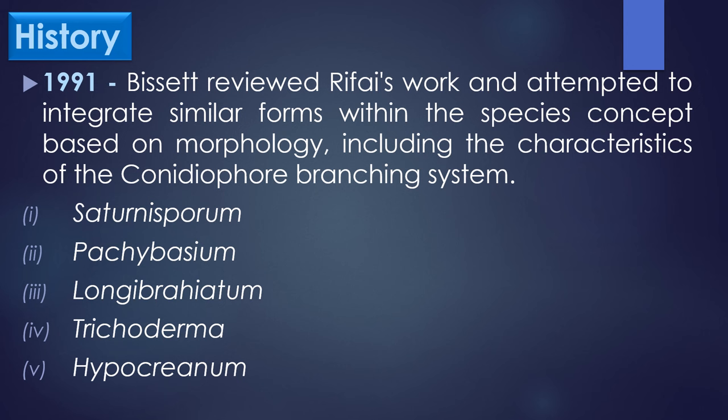In 1983, Cook and Baker described the genus Trichoderma as a common soil inhabitant and the conidiophores are terminating in phialids. In 1991, Bicet reviewed Riffay's work and attempted to integrate similar forms within the species concept based on morphology, including the characteristic of the Conidia 4 branching system. As a result, Trichoderma was classified into 5 sections.